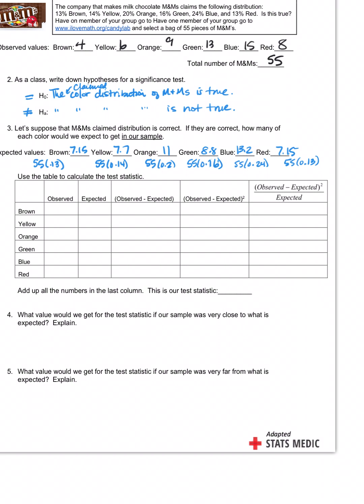The first thing we do is list out what did we observe. We're just going to copy down those numbers. Brown was 4, yellow was 6, orange is 9, green is 13, 15 and 8. And the expected values are what we calculated: 7.15, 7.7, 11, 8.8, 13.2, 7.15.